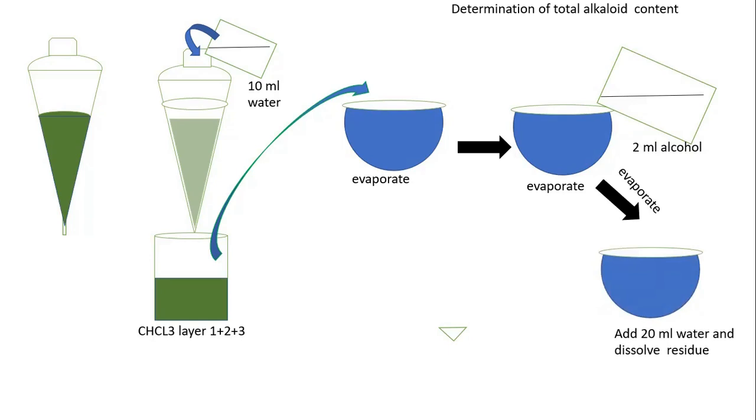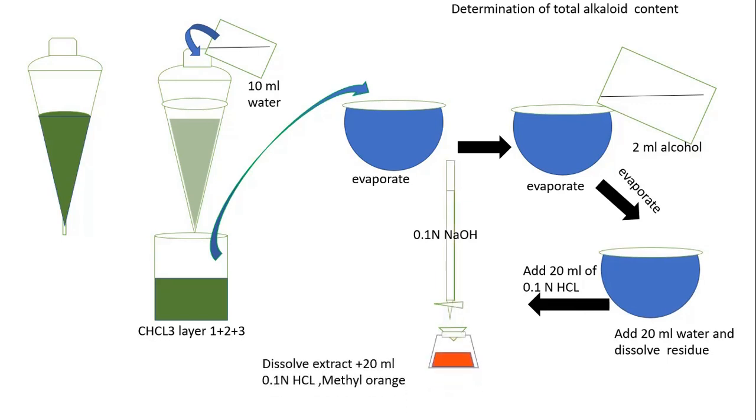To this residue, add 20 ml of water to dissolve the residue. Once you have added 20 ml of water, add 20 ml 0.1 normal HCl. Then, in a burette, take 0.1 normal NaOH solution. In a conical flask, take your dissolved extract plus 20 ml 0.1 normal HCl and methyl orange as an indicator. By utilizing 0.1 normal sodium hydroxide solution, titrate until the endpoint where the orange color changes to colorless.